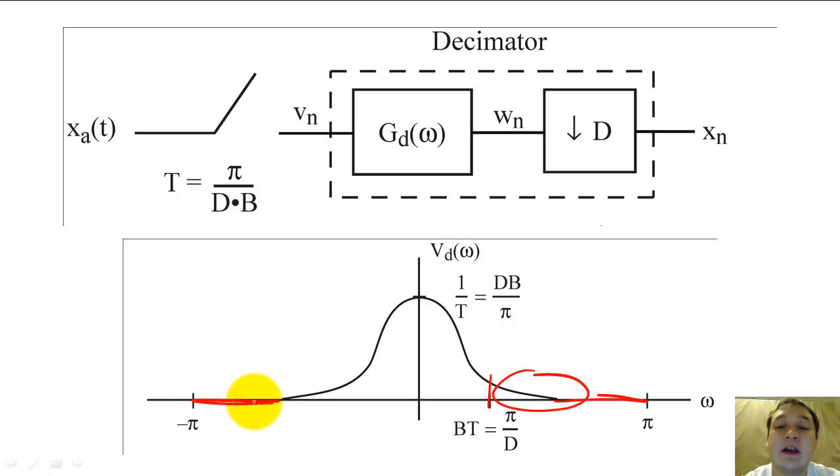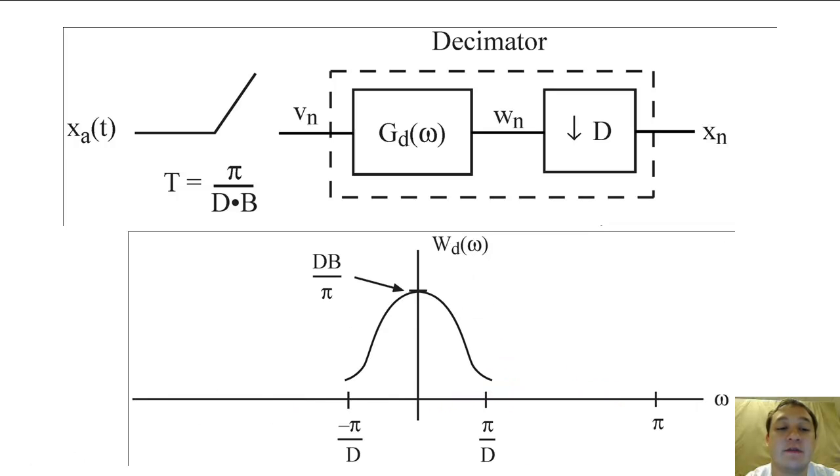To eliminate aliasing before we make the system have the sampling frequency we really want, we must apply a low-pass filter with amplitude 1 and cutoff frequency pi over D. After we apply the low-pass filter, the signal should abruptly reduce to zero at the cutoff frequency.